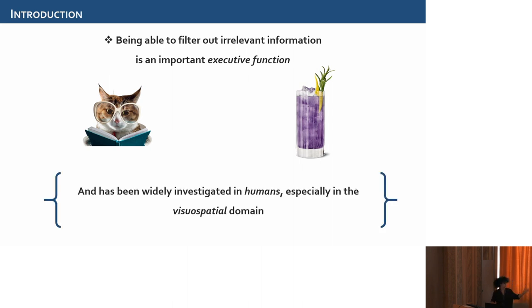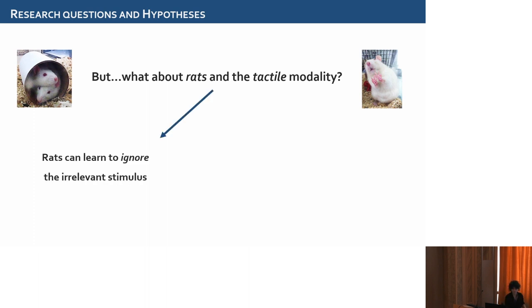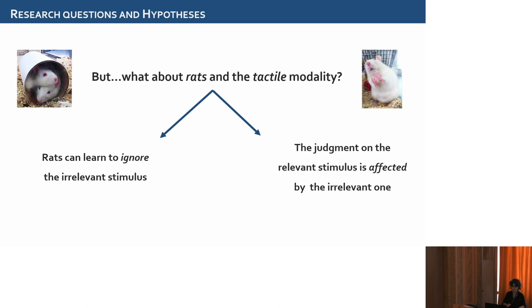These functions have been widely investigated in humans, especially in the visual-spatial domain. Nevertheless, here we want to know whether rats can learn to ignore an irrelevant tactile stimulus and whether this irrelevant stimulus can impact a perceptual judgment made on the relevant one. Why rats? These animals are highly intelligent and with them we can achieve a level of resolution not possible with humans. We want to focus on the tactile modality because in this respect it has been poorly investigated.